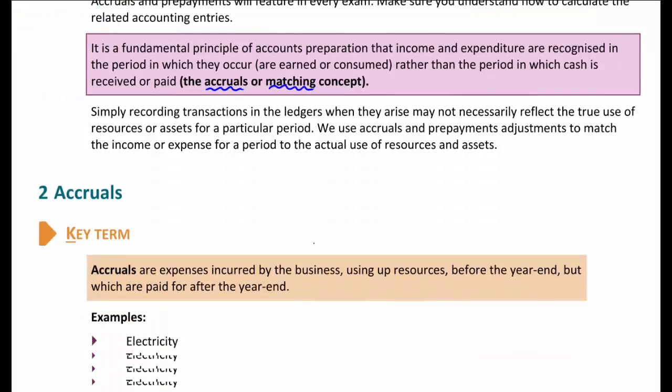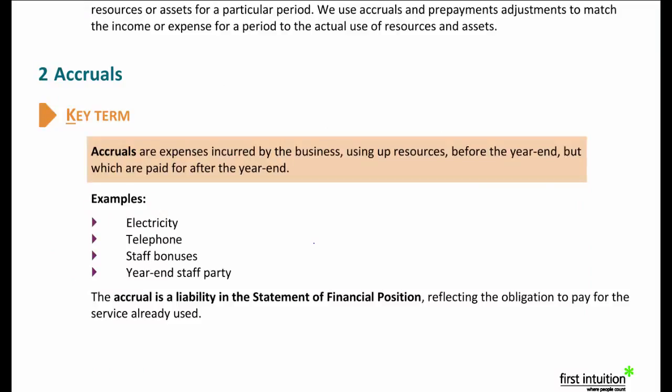In section 2 we have a definition of what we mean by an accrual. An accrual is an expense that is incurred by the business during the year but which is paid for — and probably invoiced — after the year-end. Examples you're likely to see in your exam include electricity bills received after the year-end, telephone bills for the last month or two, staff bonuses that relate to the accounting period but are paid in the following year, and year-end staff parties. An accrual is a current liability in the statement of financial position, representing the obligation to pay for a service already used.